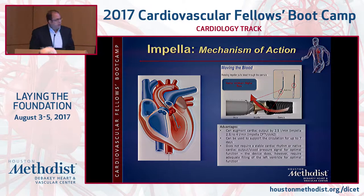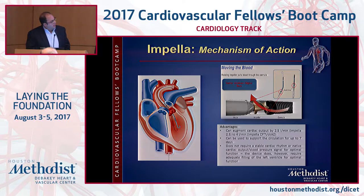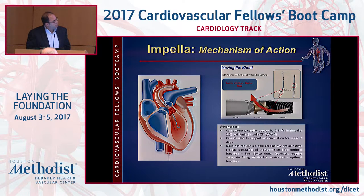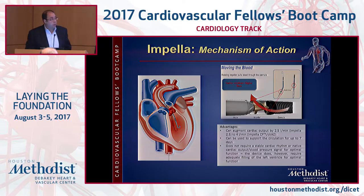Impella is the newer device — available for about 10 years with significant advances. We now have RV support with the Impella, and higher degrees of LV support. The Impella CP can provide up to 3.2–3.5 L/min via a 14 French system and directly unloads the left ventricle. Avoid using it when there is LV thrombus or severe aortic regurgitation.